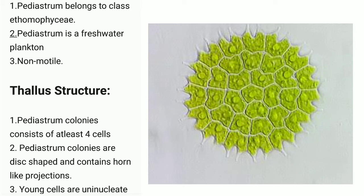Point 3: Young cells are uninucleate, meaning each has a single nucleus. On the screen, you can see the image of the Pediastrum alga.